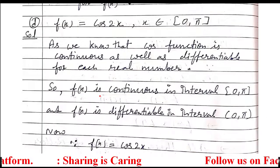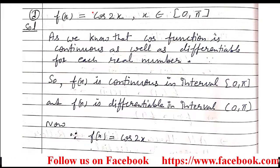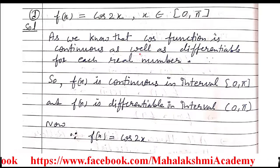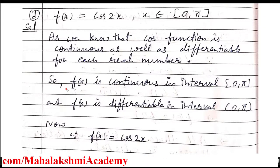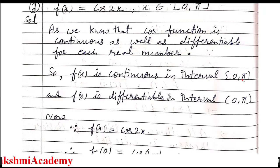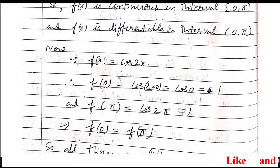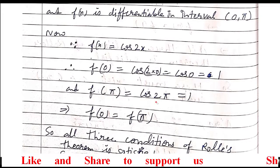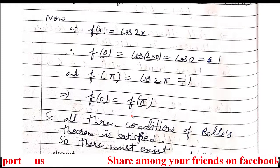Now we move to part D of question 2. Here again we apply Rolle's theorem to f(x) = cos(2x). Since the cosine function is continuous and differentiable for every real number, the first condition — f(x) is continuous in [0,π] — and the second condition — f(x) is differentiable in (0,π) — are both satisfied. For the third condition: f(0) = cos(0) = 1 and f(π) = cos(2π) = 1. Since f(0) = f(π), the third condition is also satisfied.